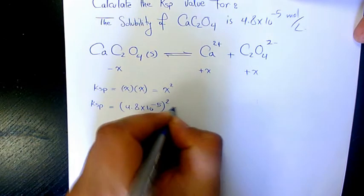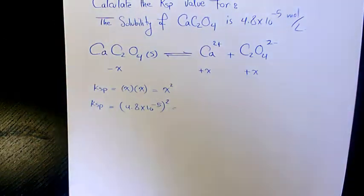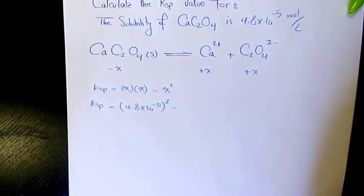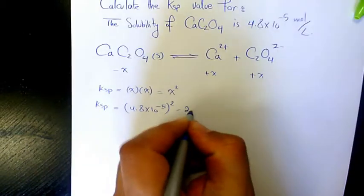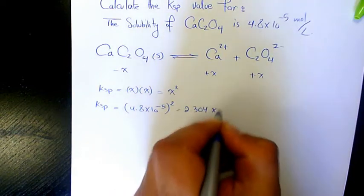That will be 2.304 times 10 to the power of negative 9.